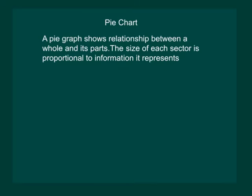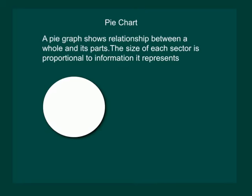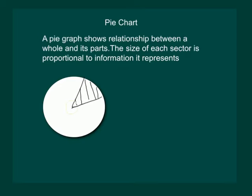Let us try to understand what the definition says. Let us consider that this circle represents one whole day. We know that if we draw two radii, then the area covered by them is called a sector. Also, we need to revise that the total angle of a circle is 360 degrees.